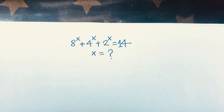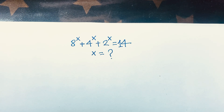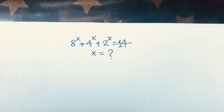Hello everyone. In this video we have solved this math Olympiad question. The question is 8 to the power x plus 4 to the power x plus 2 to the power x is equal to 14, and we have to find out what is the value of x in this exponential equation.